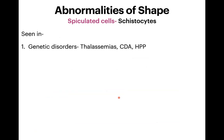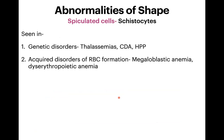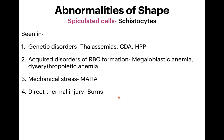Schistocytes can be seen in genetic disorders such as thalassemias, congenital dyserythropoietic anemias, and hereditary pyropoikilocytosis, or in acquired disorders of RBC formation like megaloblastic anemia and dyserythropoietic anemias. They also appear due to mechanical stress — as in microangiopathic hemolytic anemias — and direct thermal injuries like burns.